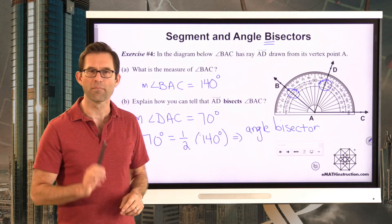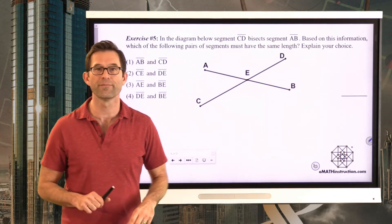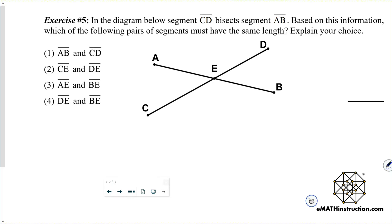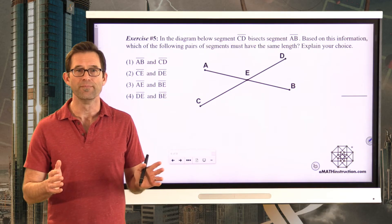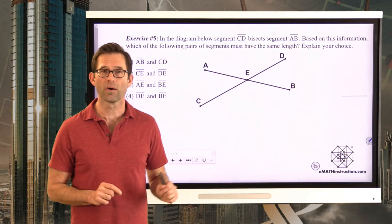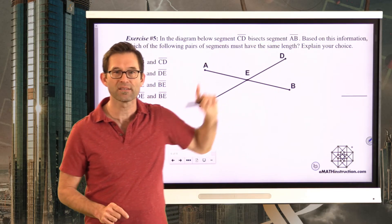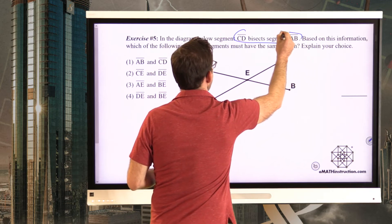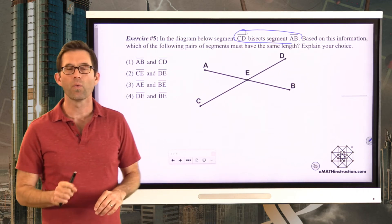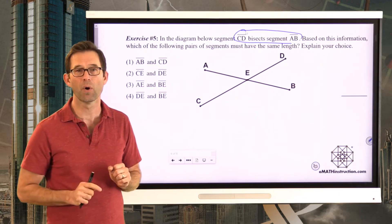Now, let's look at a segment bisector. Exercise number five. In the diagram below, segment CD bisects segment AB. Based on this information, which of the following pairs of segments must have the same length? Explain your choice. Alright, again, if we can cut an angle in half with a ray, we can cut a segment in half with another segment. Here, we are told that segment CD bisects segment AB. That's the important statement. CD bisects AB. Now, given that, we should be able to know that two segments have the same length. Which two are they? Take a moment and figure this out.